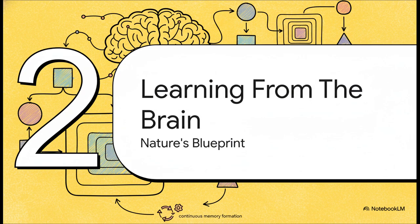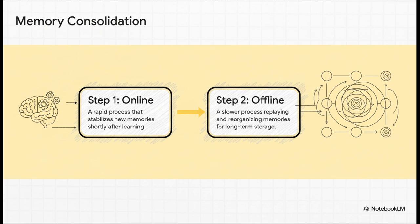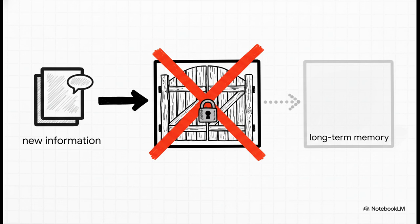So if we want to solve this AI amnesia problem, where do we even look for inspiration? Well, the answer is right inside our own heads. We can look at the most sophisticated learning machine ever known, the human brain. Our brains have this incredibly smart, two-stage system for making memories stick. First, there's this super-fast online phase that happens almost right away. It just stabilizes new information. But then, there's this slower, offline phase. This often happens when we're sleeping, where those memories get replayed and strengthened and woven into everything else we know. And that right there is the problem in a nutshell. Current AIs are missing that crucial first step. They don't have that online consolidation. All the new information from our conversations, it never even starts the journey into long-term memory. It's like a gateway that was sealed shut the moment training ended.